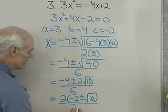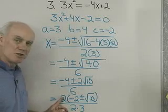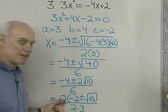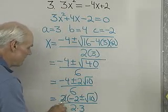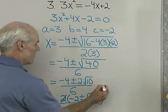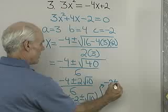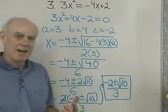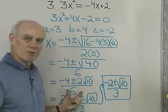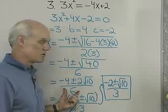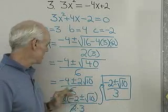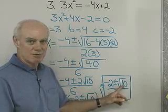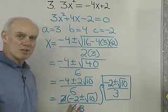And I factor a 2 from the denominator to get 2 times 3. I have a 2 as a common factor in the numerator and denominator, so I divide it out. What I end up with is negative 2 plus or minus square root 10, all divided by 3. The earlier form is not incorrect — it's just not in lowest terms. These two solutions can be reduced to the simpler form negative 2 plus or minus square root 10 over 3 by factoring out the 2 common to the numerator and denominator.